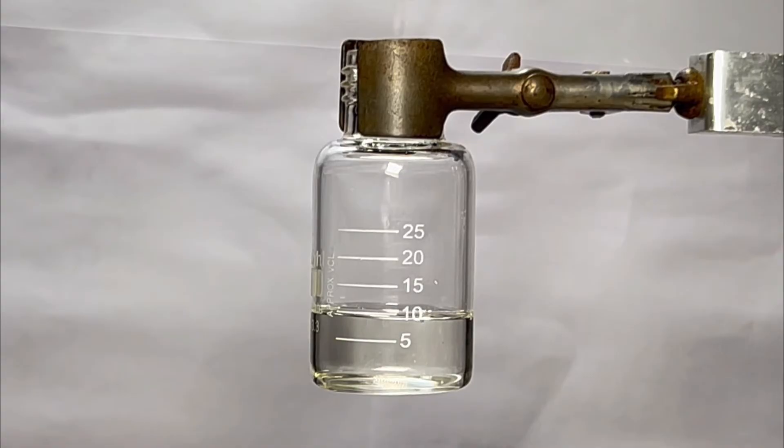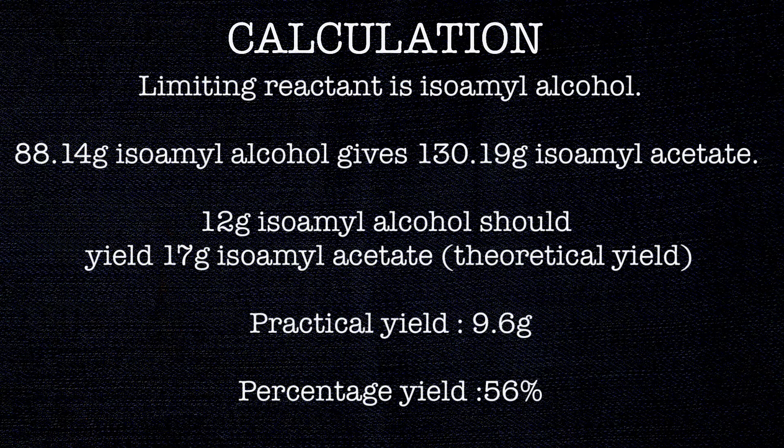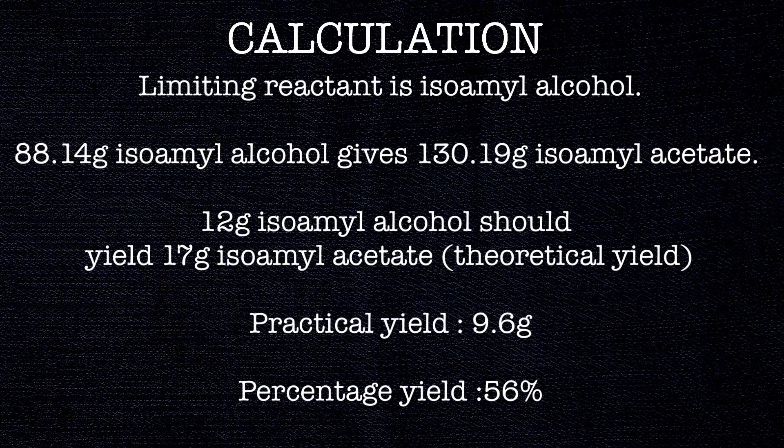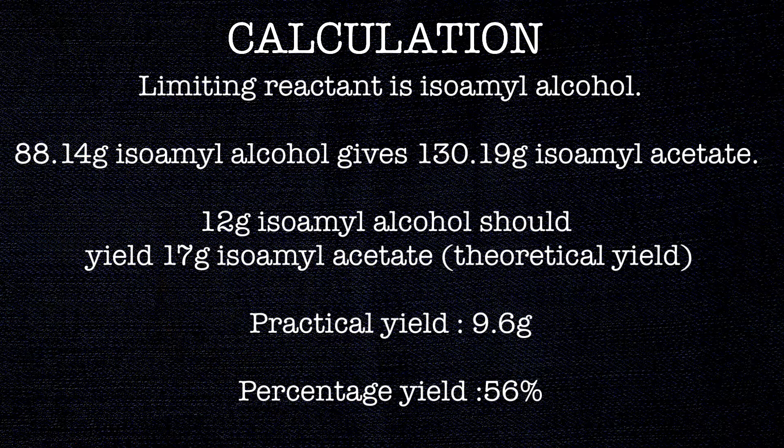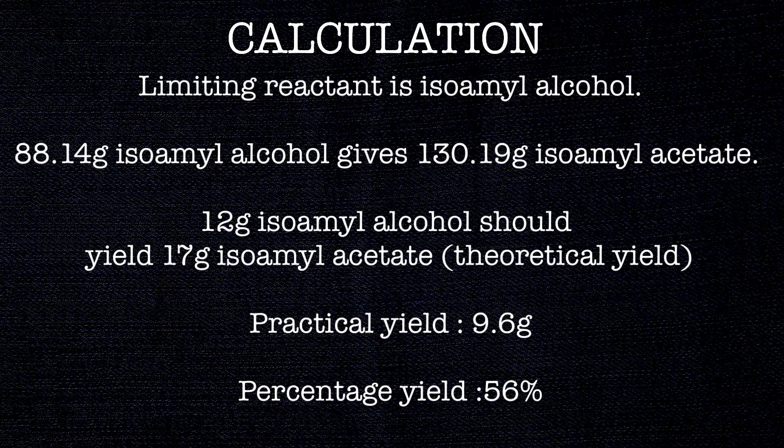Now let us move on to the calculation part. Here the limiting reactant is isoamyl alcohol, so we will be calculating the yield based on the amount of isoamyl alcohol used. Here we have taken 12 grams of isoamyl alcohol, so the theoretical yield should be 17 grams. Practical yield was 9.6 grams, so the percentage yield is 56%. That's all in this video.